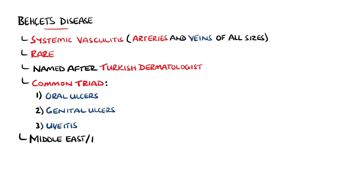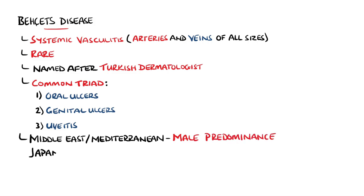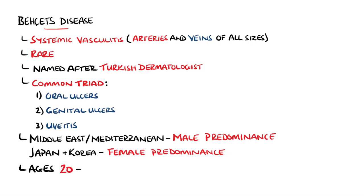One of the most commonly affected areas is the Middle East, and it is often described as being seen in the Silk Road countries around the Mediterranean. Overall, it affects both genders equally; however, in the Middle East it is seen more commonly in males, while in Japan and Korea it is seen more frequently in females. The typical age bracket of those affected is between 20 and 40 years of age.